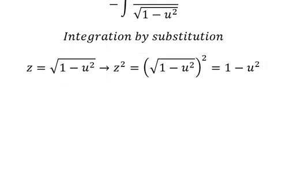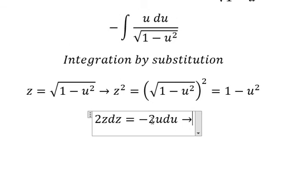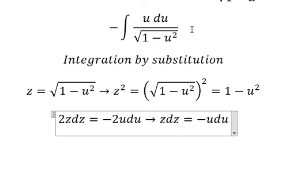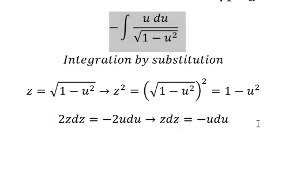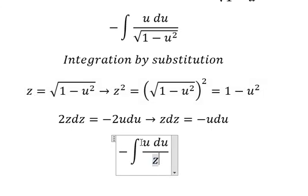Next we need to do the first derivative of z squared equals to 1 minus U squared, then divide both sides by 2. The square root is z. Negative U dU we change by z dz.